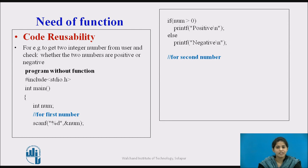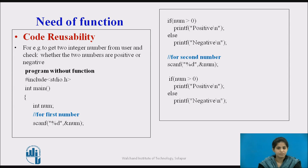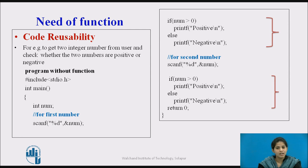The condition checks whether the scanned number is greater than 0 — if so, the number is positive, else it is negative. Accordingly, either the first or second statement will be executed. Similarly, we check for the second number following the same steps. Here we are rewriting the same piece of code again, which is not good programming practice. Hence, functions come into the scenario where this rewriting can be avoided.